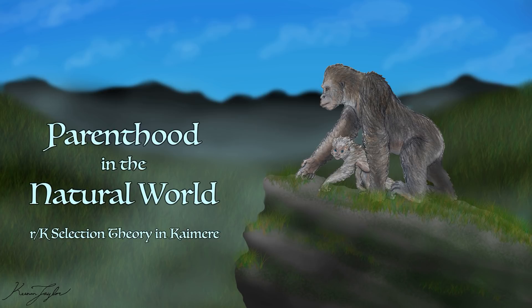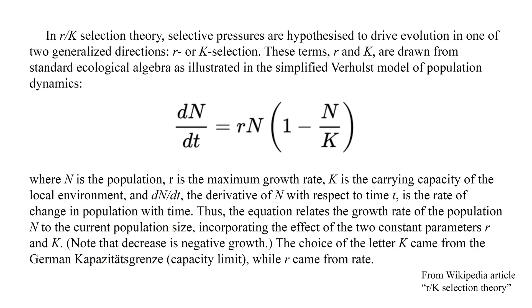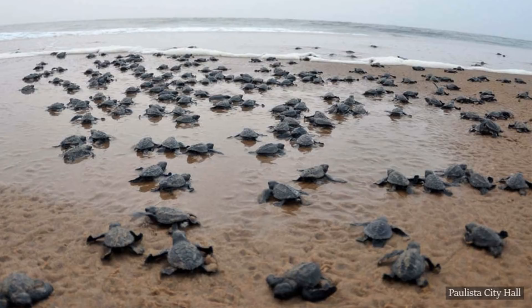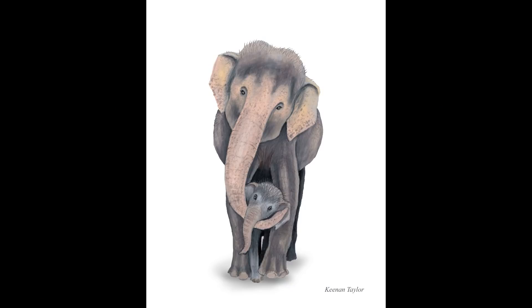There are many ways that the duties of parenthood are performed in the natural world. In ecology, r/K selection theory explores the trade-off of quantity of offspring and quality of investment. Animals like turtles and mice that perform an extreme R selection have a high quantity of offspring and leave once the eggs are laid or shortly after babies are born. Exemplars of K selection like humans, orcas, and elephants have very few offspring and invest a lot of time and energy into preparing them for adulthood.